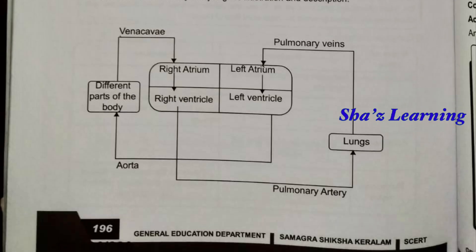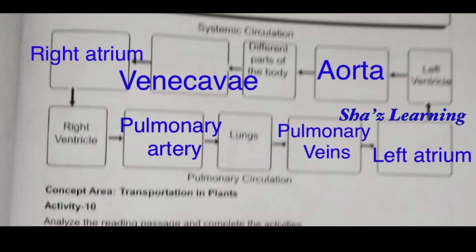Let's look at the next page of this flowchart. The blood in the right ventricle is deoxygenated blood — carbon dioxide blood. The deoxygenated blood goes through the pulmonary artery to the lungs. The pulmonary vein carries blood to the left ventricle. The aorta carries blood to different parts of the body.